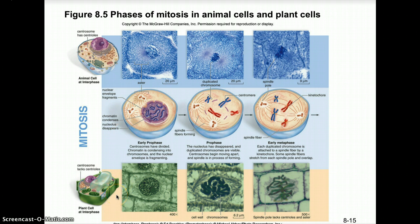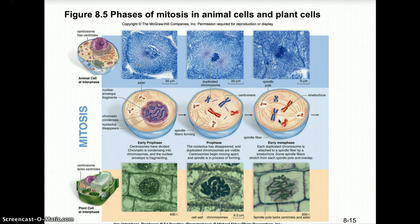In prophase, chromatin condenses into chromosomes and the nuclear envelope begins to fragment and dissolve; the nucleolus fully disappears and duplicated chromosomes become visible while centrosomes move apart and the spindle forms. In early metaphase each duplicated chromosome attaches to a spindle fiber via a kinetochore; some spindle fibers attach to chromosomes to move them, while others stretch to the poles to help elongate the cell for cytokinesis.